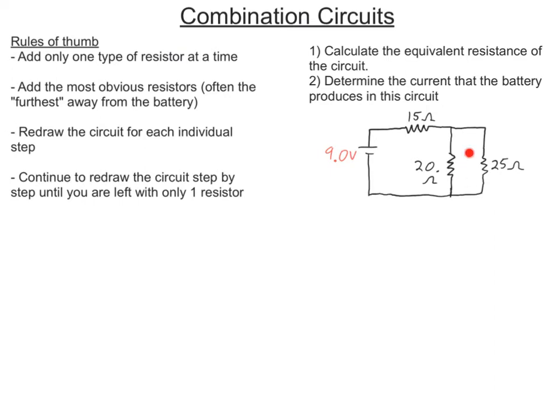You might say, hey, look, these two guys seem to be in series, but they're not necessarily. Series means the current is the same through both resistors, but it's not. Notice the current comes out of the battery and then some of it goes to the 20Ω and some of it goes to the 25Ω, meaning that the 15Ω is not in series with the 20Ω. It's actually in series with the combination of the 20Ω and the 25Ω.